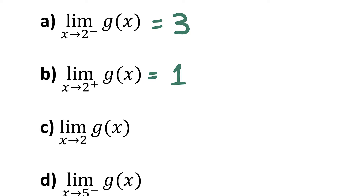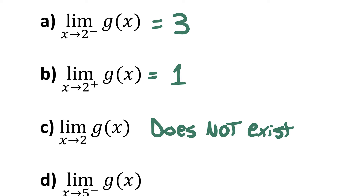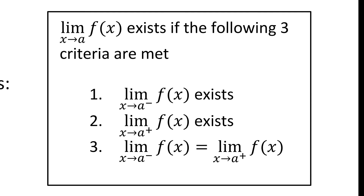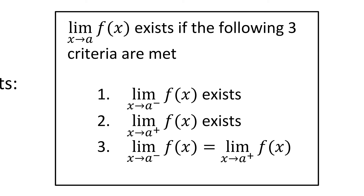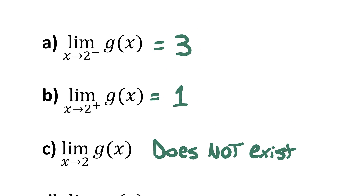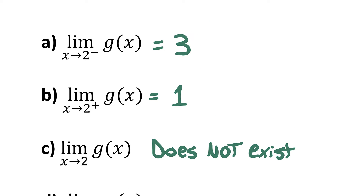Because the left and right-hand limits are not equal, we say the overall limit as x approaches 2 does not exist. Let me remind you of the rule: in order for a limit to exist, three criteria must be met — the limit from the left must exist, the limit from the right must exist, and they must be equal to each other. Even though both one-sided limits existed, they weren't equal, so the limit as x approaches 2 of g(x) does not exist.